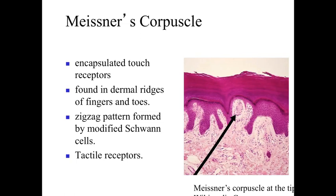The first encapsulated sensory receptor we'll discuss is Meissner's corpuscles — an encapsulated touch receptor with a distinct anatomical structure. They're found within the dermal ridges, essentially in those dermal up-points and interdigitations within the fingers and toes. You can identify them because they're encapsulated, surrounded by modified Schwann cells organized in a zigzag appearance — you can see their nuclei arranged in that zigzag pattern. These are found in the fingertips and toes and are an example of a tactile receptor.